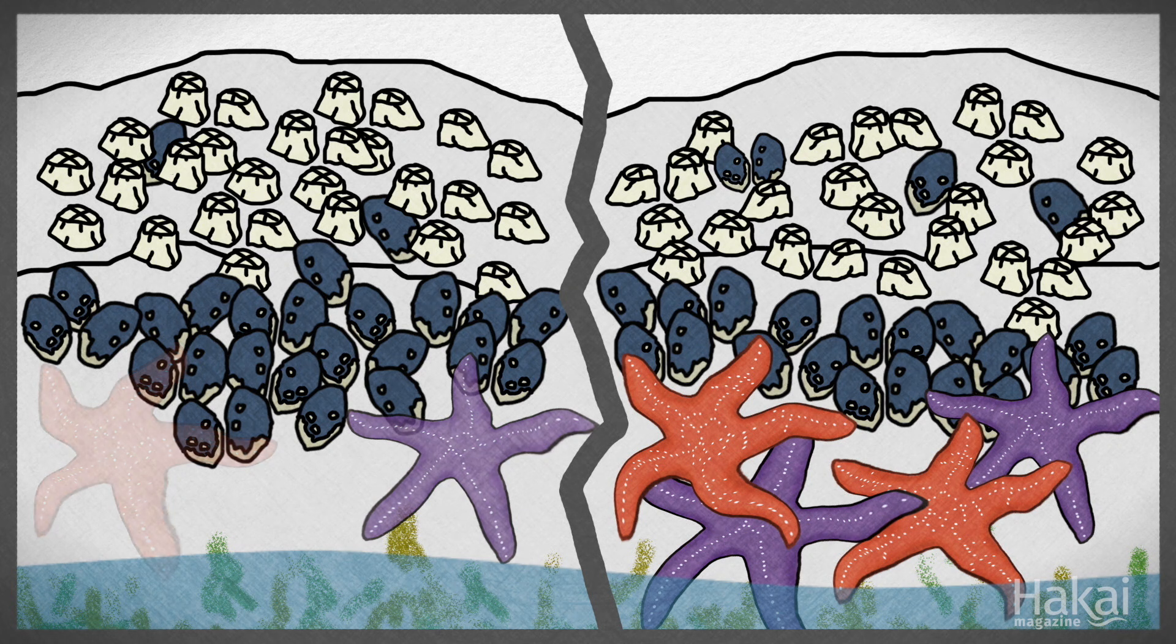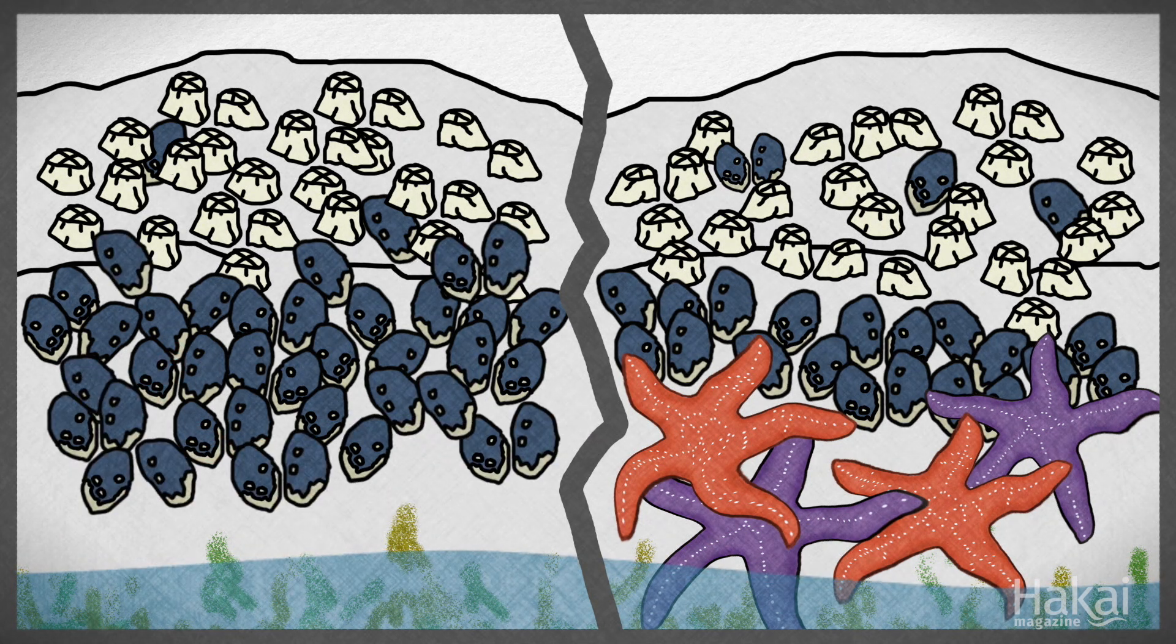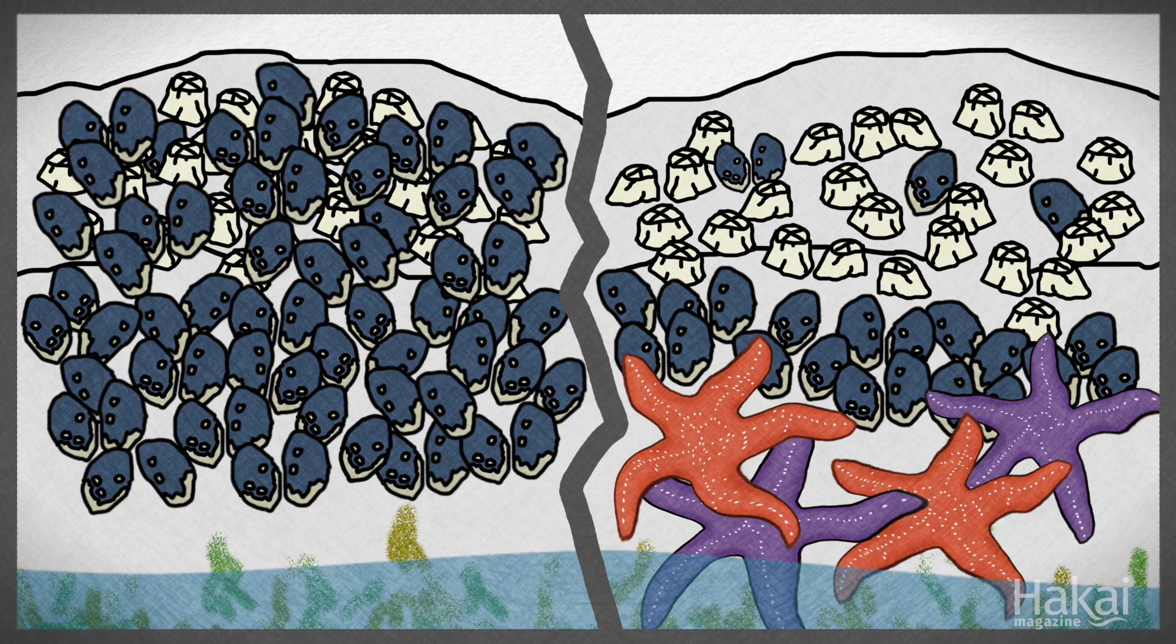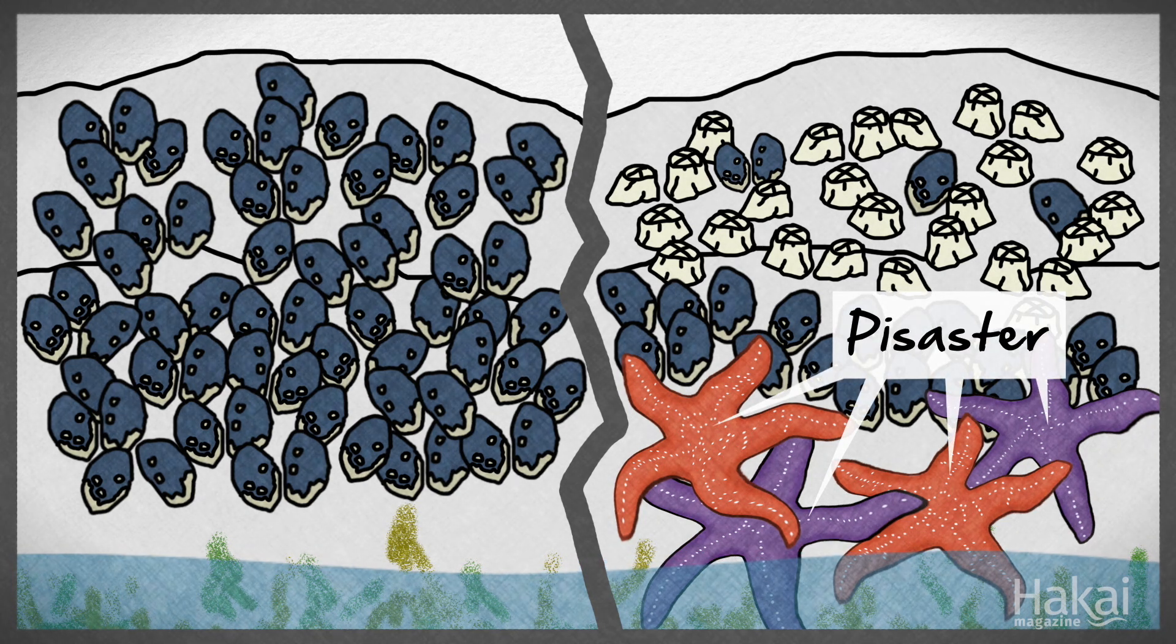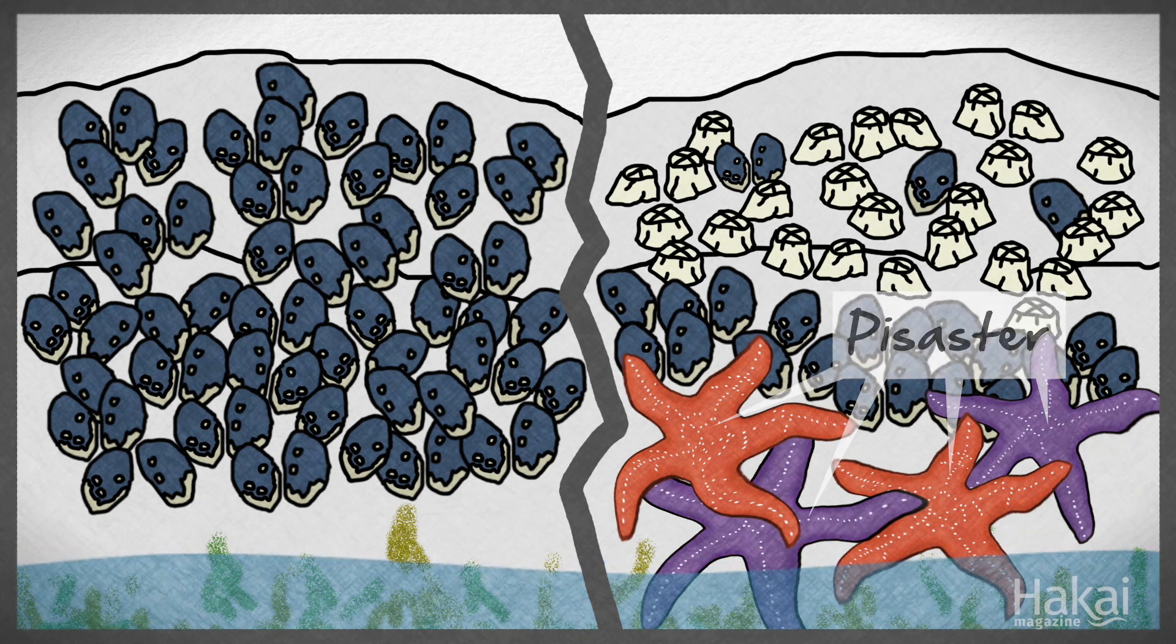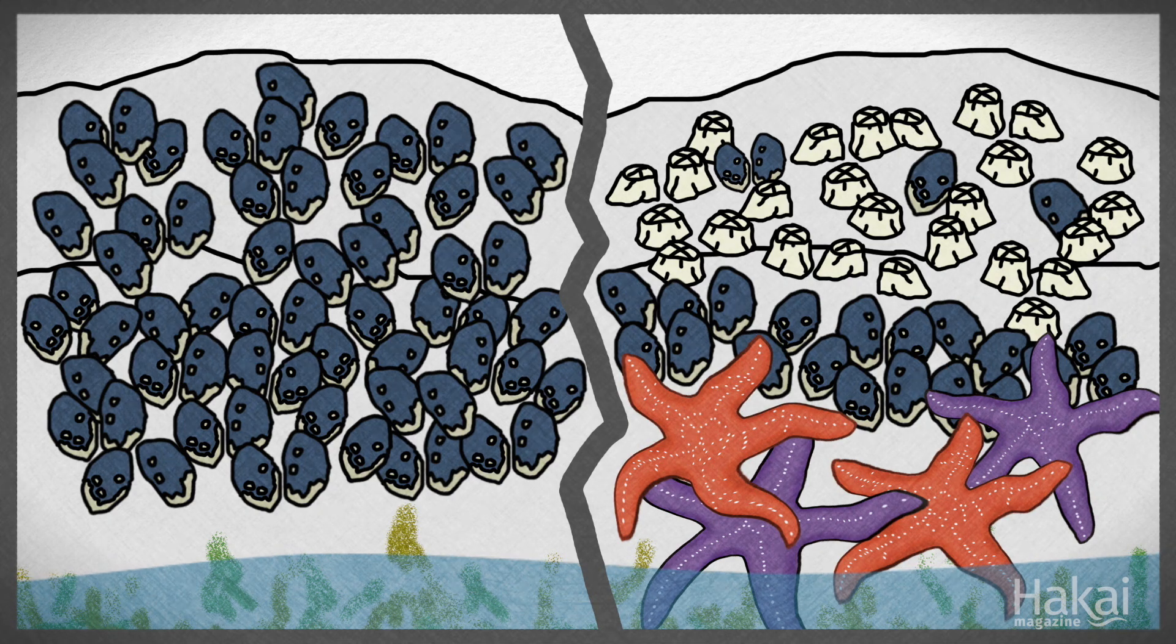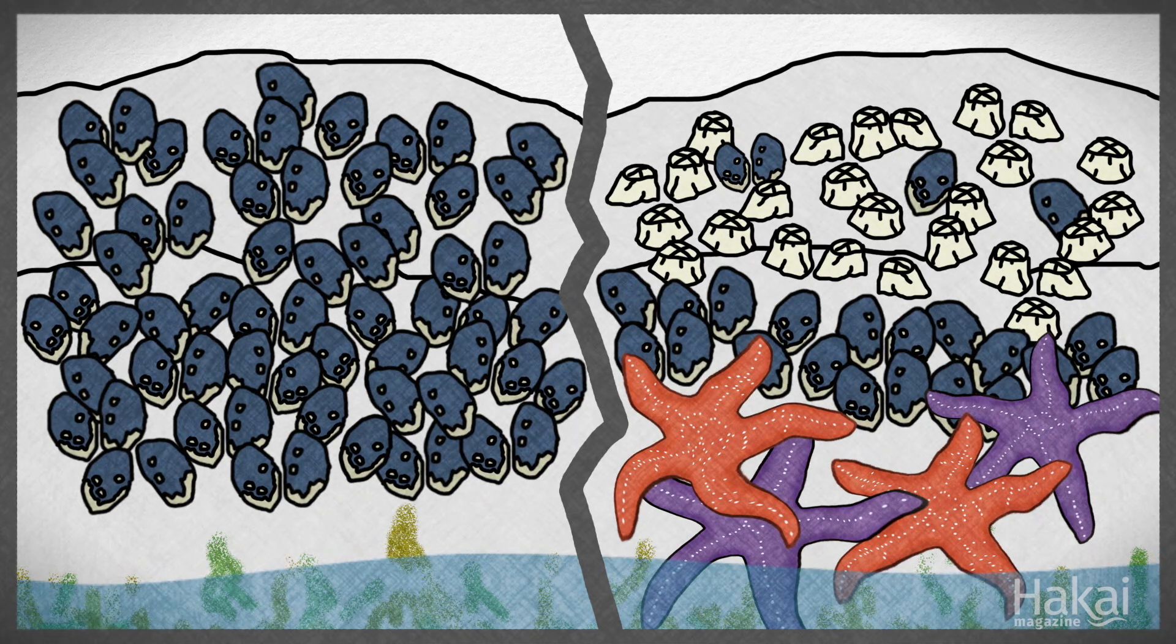You remove the starfish from the system, and mussels take over. And they outcompete a lot of other resident species, some of which pisaster would never think about eating. So it had a community impact. And that demonstration experimentally had a huge effect.